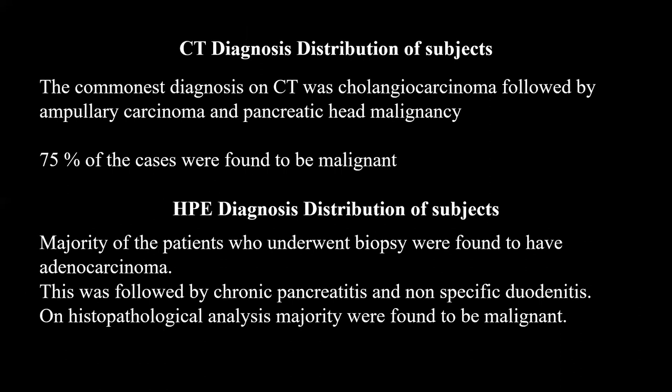CT diagnosis distribution: the commonest diagnosis on CT was cholangiocarcinoma, followed by ampullary carcinoma and pancreatic head malignancy; 75% of cases were found to be malignant. HPE diagnosis distribution: the majority of patients who underwent biopsy were found to have adenocarcinoma, followed by chronic pancreatitis and nonspecific duodenitis. On histopathological analysis, the majority were found to be malignant.